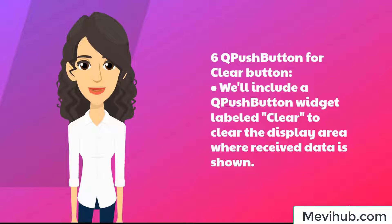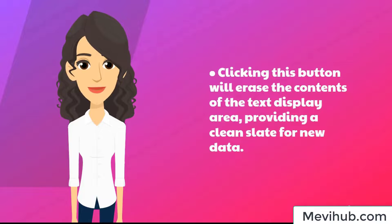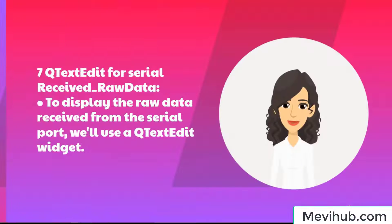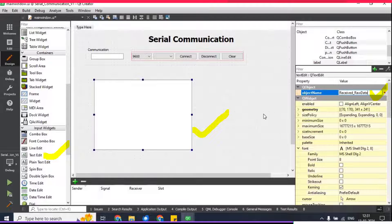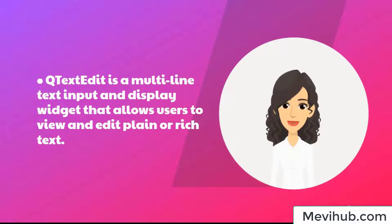Step 6: QPushButton for Clear Button. We'll include a QPushButton widget labeled 'Clear' to clear the display area where received data is shown. Clicking this button will erase the contents of the text display area, providing a clean slate for new data. Step 7: QTextEdit for Serial Received Raw Data. To display the raw data received from the serial port, we'll use a QTextEdit widget. QTextEdit is a multi-line text input and display widget that allows users to view and edit plain or rich text.